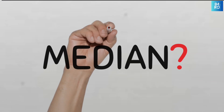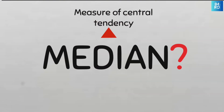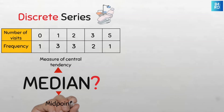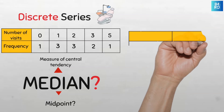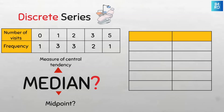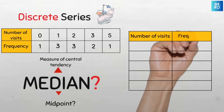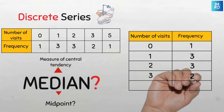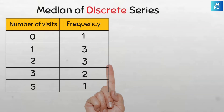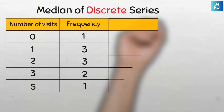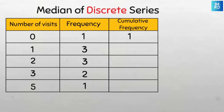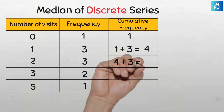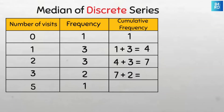Recall that the median is a measure of central tendency that indicates the middle point of the data set. Let's modify this table to make it easy for us to compute. We put the number of visits and the frequency columns, arranged neatly in a vertical manner. To find the median for discrete series, we will need to first compute the cumulative frequency. So we create a new cumulative frequency column: 1, then 1+3=4, then 4+3=7, then 7+2=9, and 9+1=10.